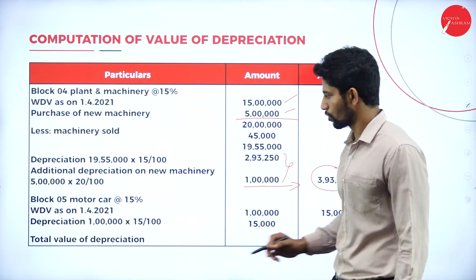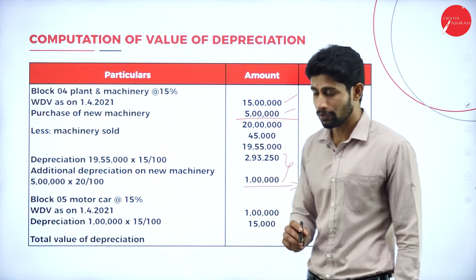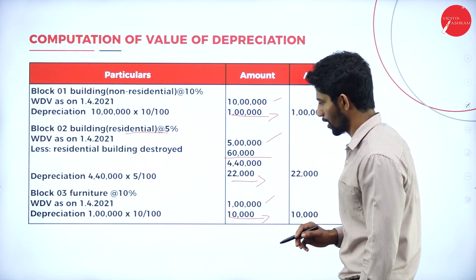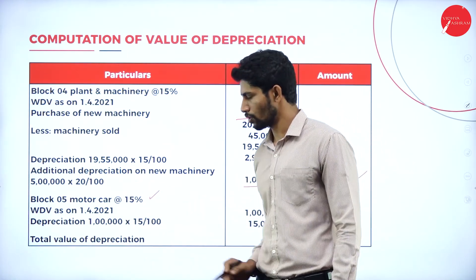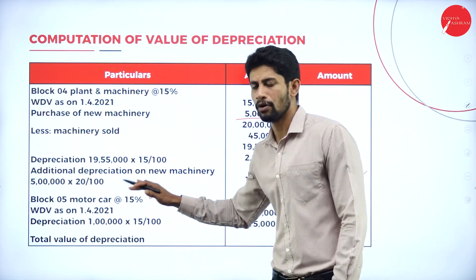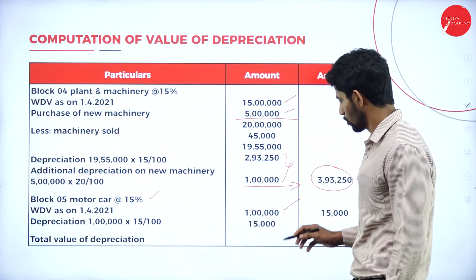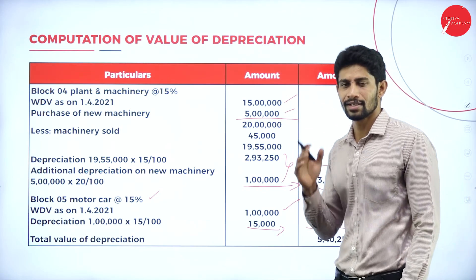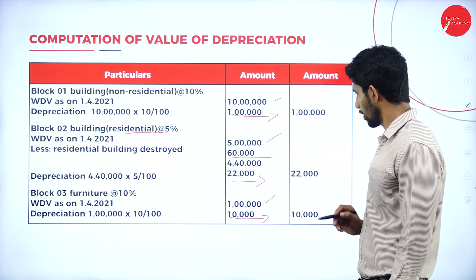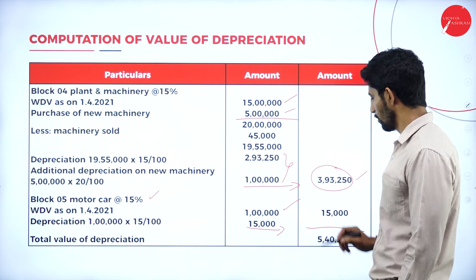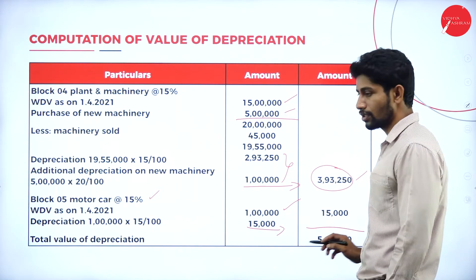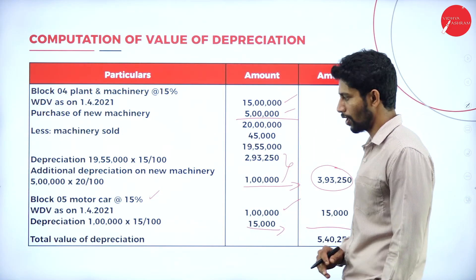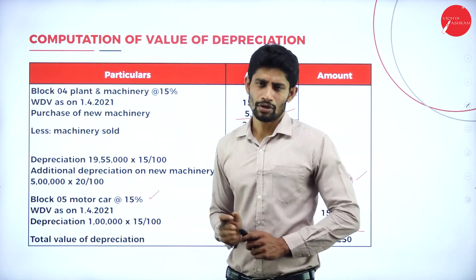Block 5 — Motor car at 15%: WDV is Rs. 1 lakh; no motor car purchased or sold; depreciation is Rs. 15,000. Now total the outer column for all 5 assets: Rs. 1 lakh plus Rs. 22,000 plus Rs. 10,000 plus Rs. 3,93,250 plus Rs. 15,000 equals Rs. 5,40,250. This is the total value of depreciation. It is very easy to solve problems under depreciation if you know the format.